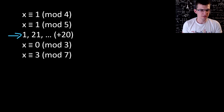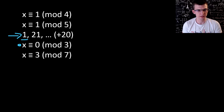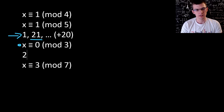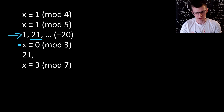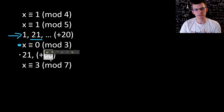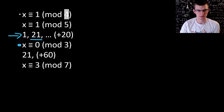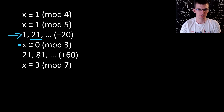Next step: in this sequence find the first value satisfying the next congruence — divisible by 3. 1 doesn't work, 21 does work; it is divisible by 3. So here I have 21. The LCM of 20 and 3 — they are co-prime, so simply the product. I can increase by 60. 60 is divisible by all moduli so far: 3, 5, and 4. The sequence is 21, 81, 141 and so on.